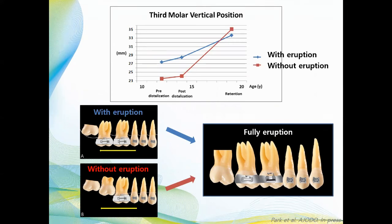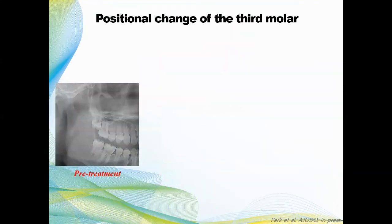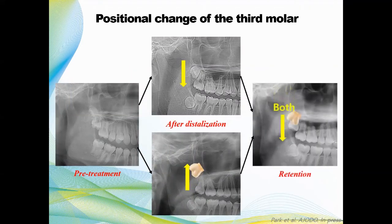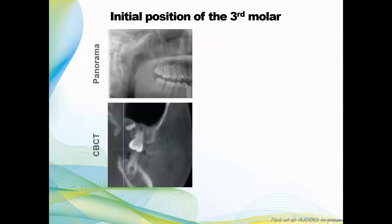This graph shows the group without second molar eruption has more change in the retention period. Based on my clinical experience, an erupted third molar moved upward or downward during distalization. However, in long-term retention, both groups showed favorable eruption of third molars. The initial position of the third molar is very important, but we cannot clearly see the position in the panoramic view. Therefore, we need to check the initial position using CBCT.